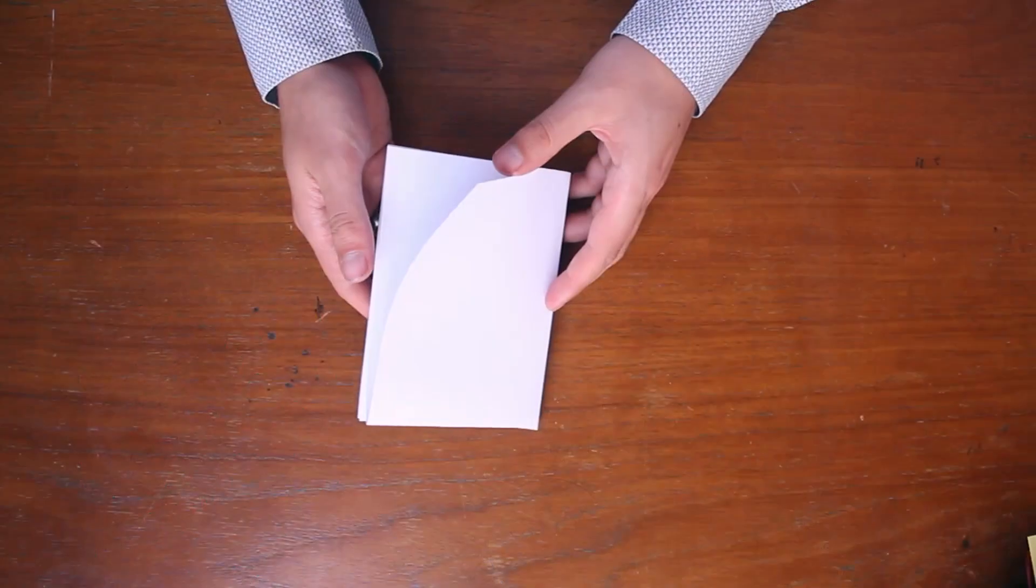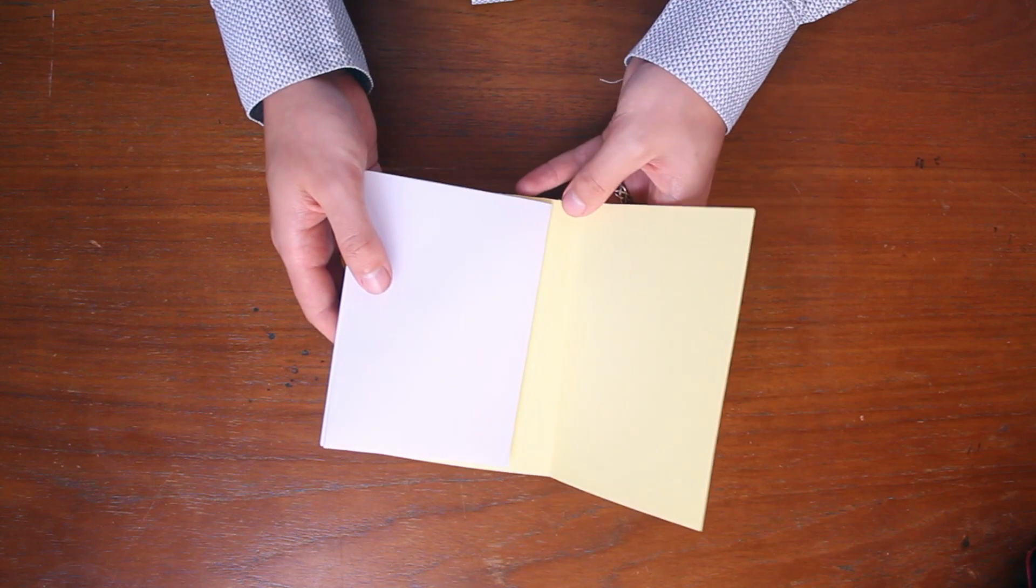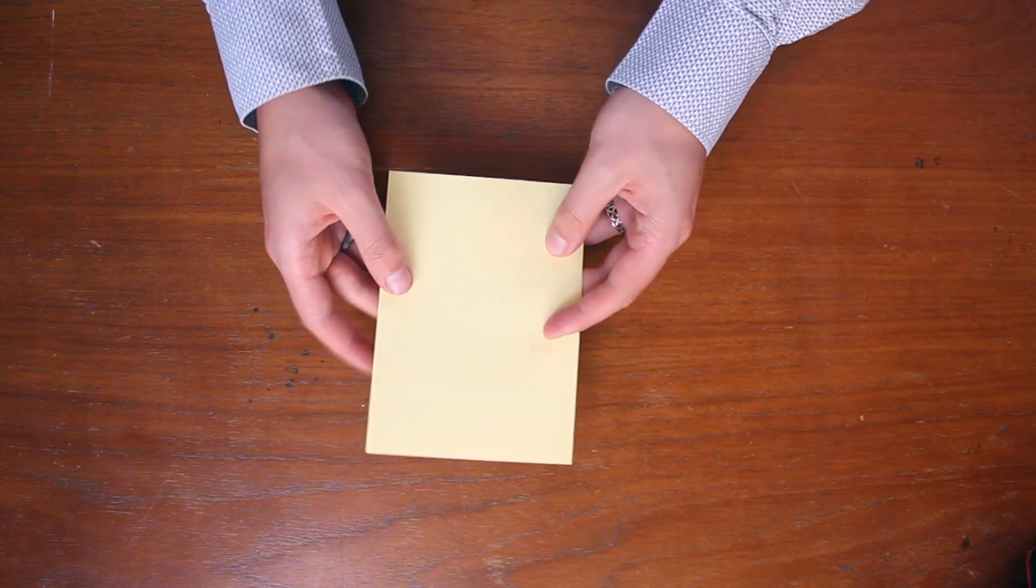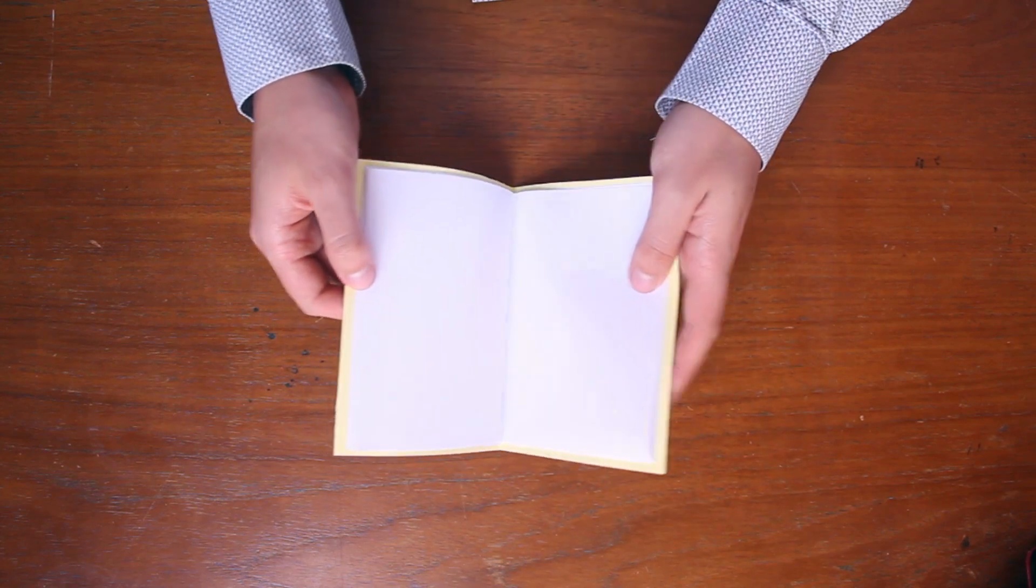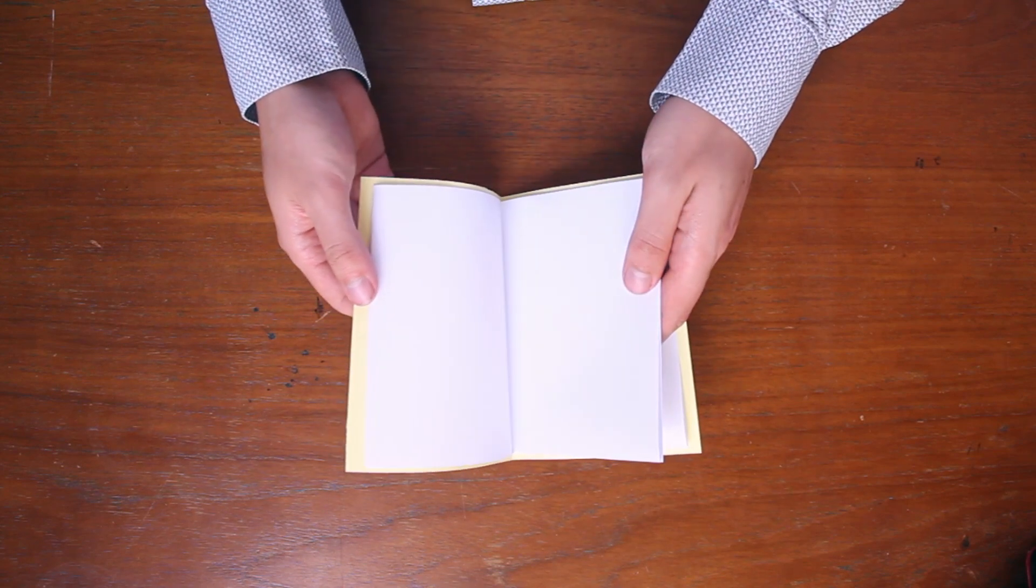If you want to make a cover, just cut a piece of card slightly larger than the outside of your book and glue it on. If you want to add more pages, make multiple booklets and glue them together, then add a cover. Your cover might need to be slightly bigger if you add lots of pages.